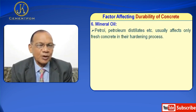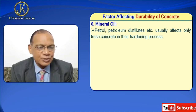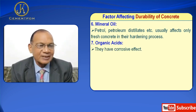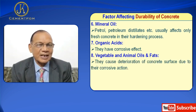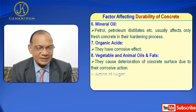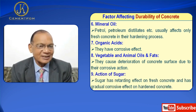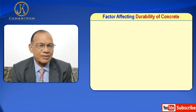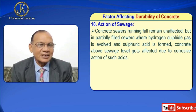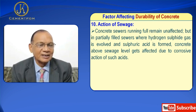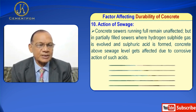Sixth is mineral oil — petrol, petroleum distillates, etc. usually affect only fresh concrete during the hardening process. Seventh is organic acids — they have a corrosive effect. Eighth is vegetable and animal oils and fats — they cause deterioration of concrete surface due to their corrosive action. Ninth is action of sugar — sugar has a retarding effect on fresh concrete and has a gradual corrosive effect on hardened concrete. Tenth is action of sewage — concrete sewers running full remain unaffected, but in partially filled sewers where hydrogen sulfide gas is evolved and sulfuric acid is formed, concrete above sewage level gets affected due to corrosive action.